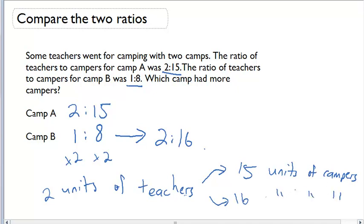Which one has more campers? Camp B has 16, therefore camp B has more campers.